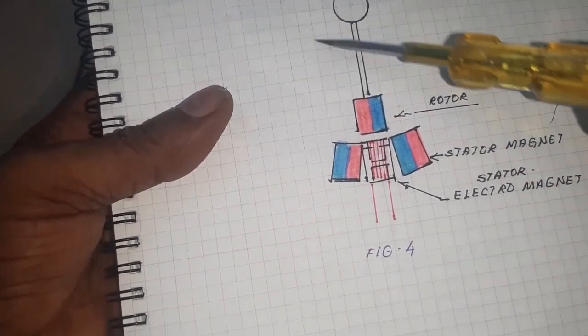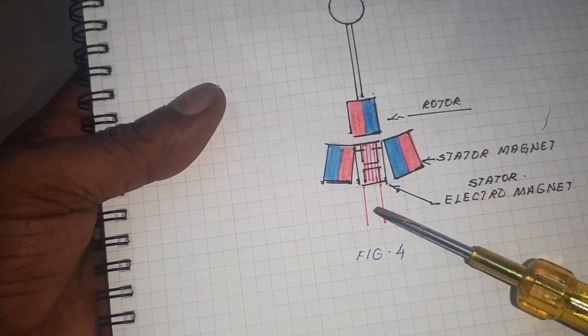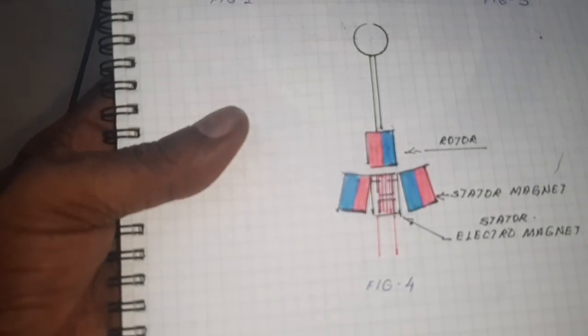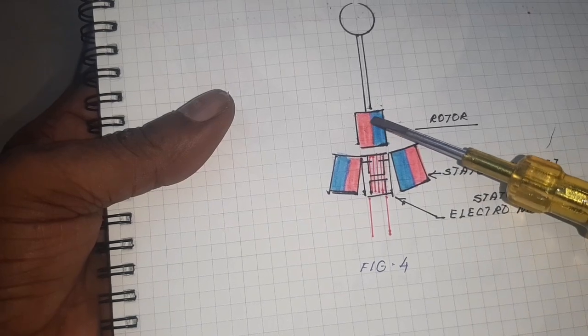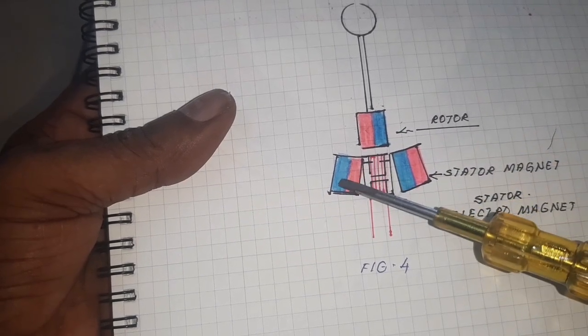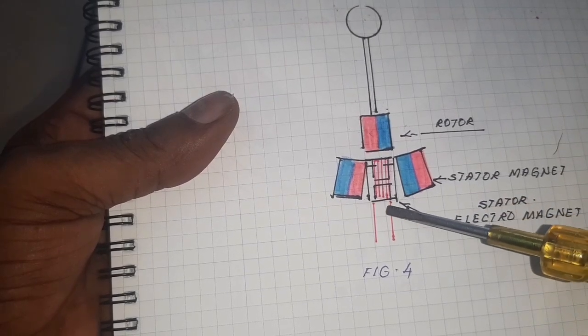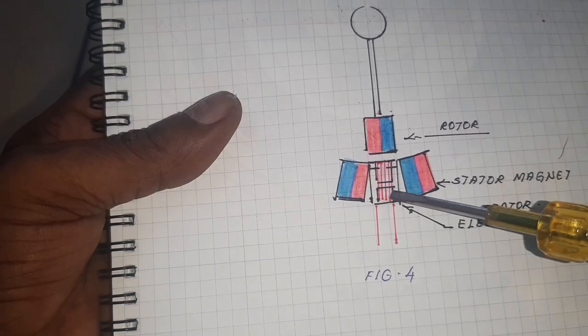Here I am using the B magnet. Instead of the B magnet, I provide an electromagnet. When the electromagnet is in off condition, the rotor magnet aligns with the A magnet. Now I am going to switch on the electromagnet. The rotor magnet moves towards the electromagnet.